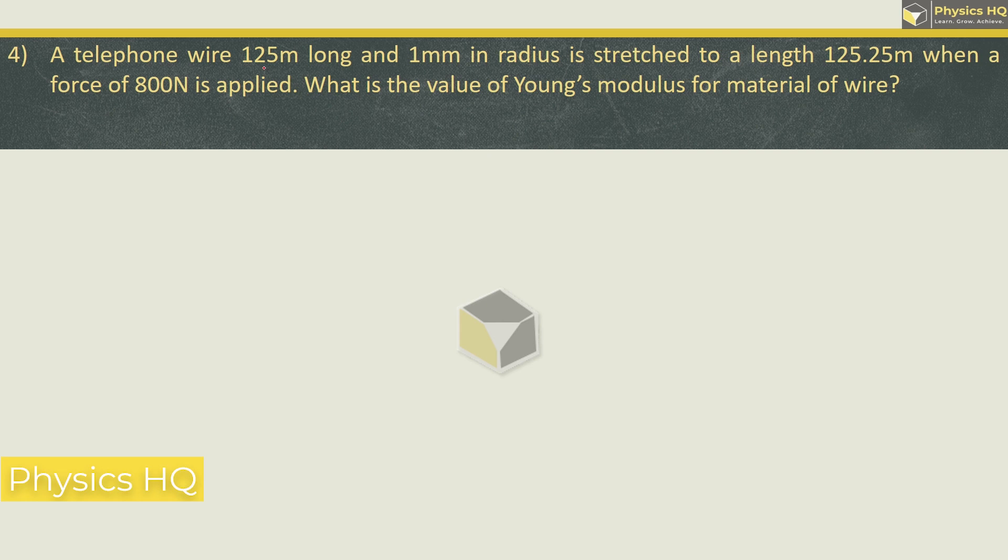A telephone wire 125 meter long and 1 mm in radius is stretched to a length of 125.25. This means how much increased? So this is small l, that is 0.25 meter when a force of 800 newton is applied. What is the Young's modulus? Young's modulus is F × L / (A × l), which is πr² × l. Force is 800.